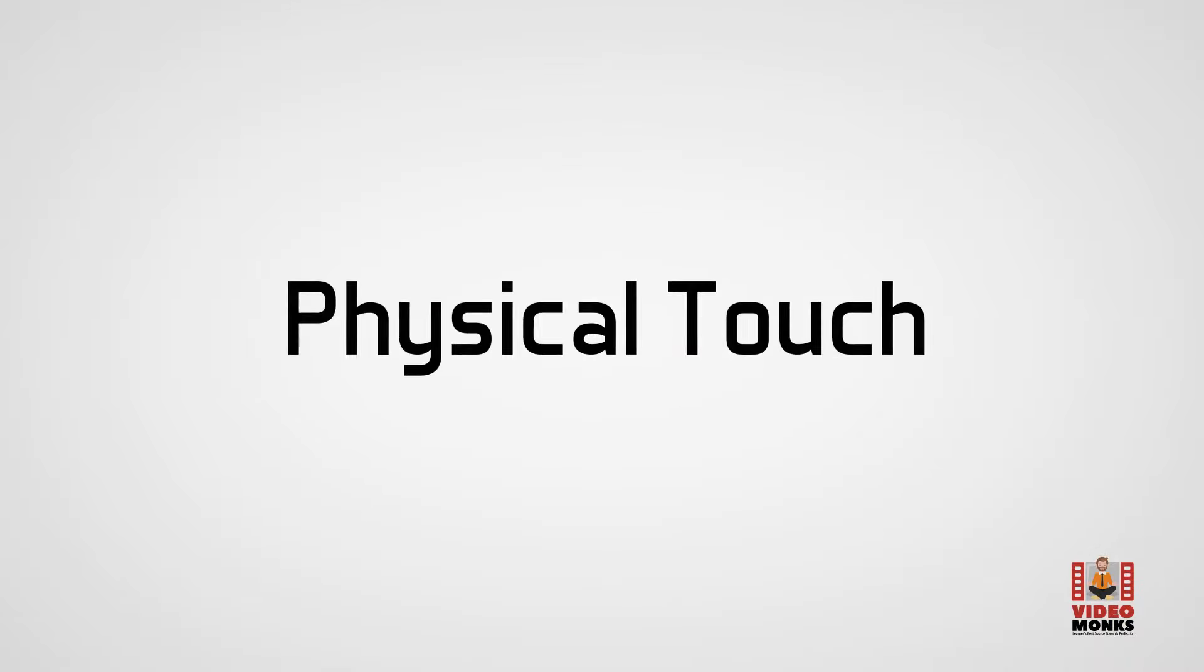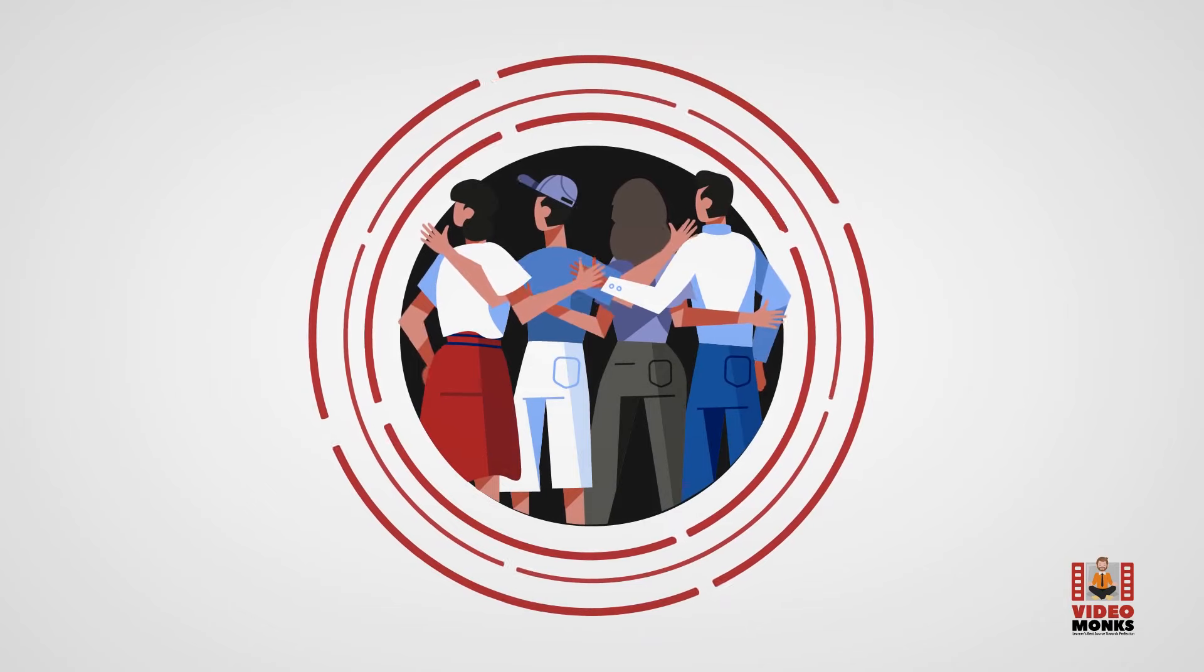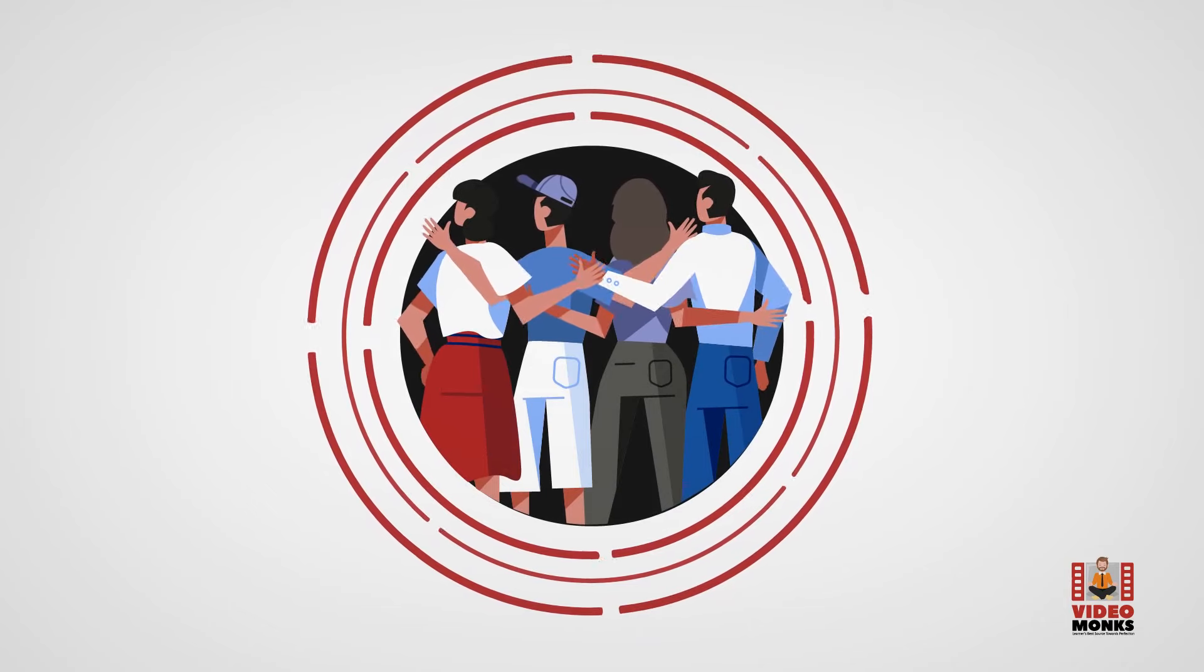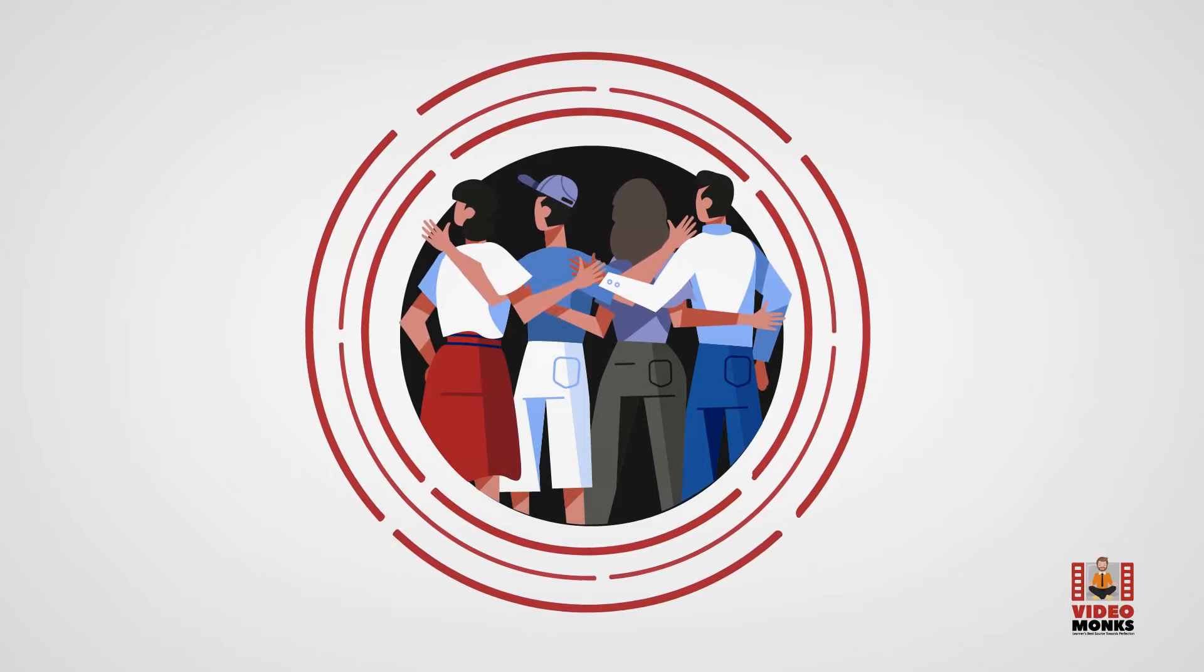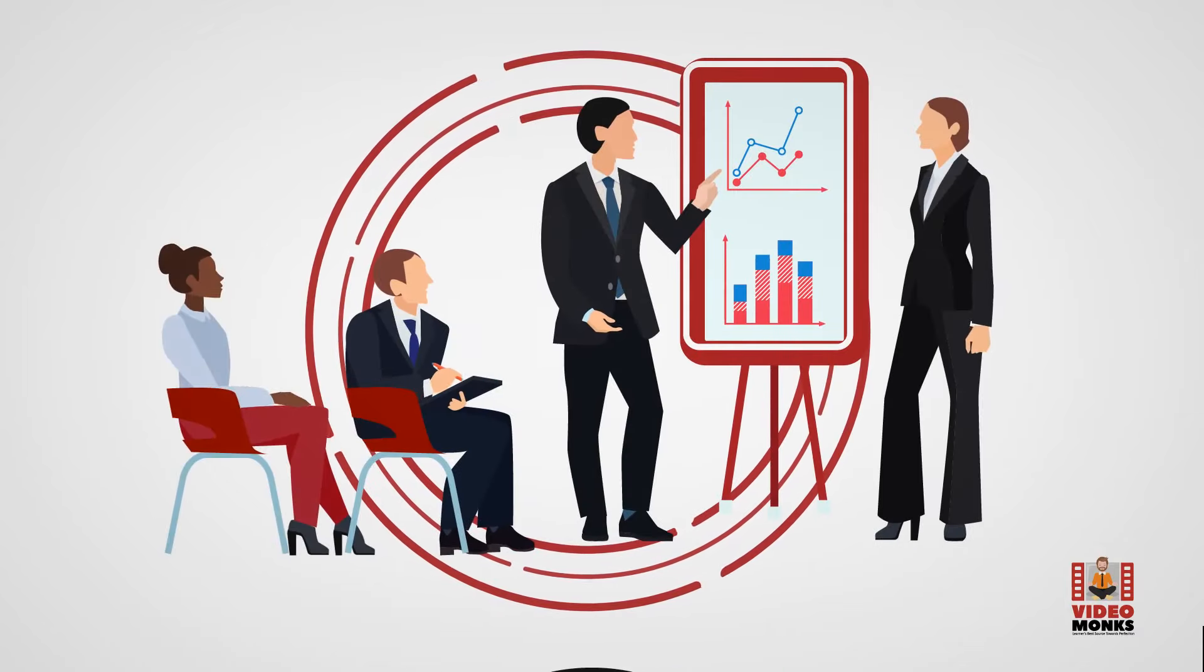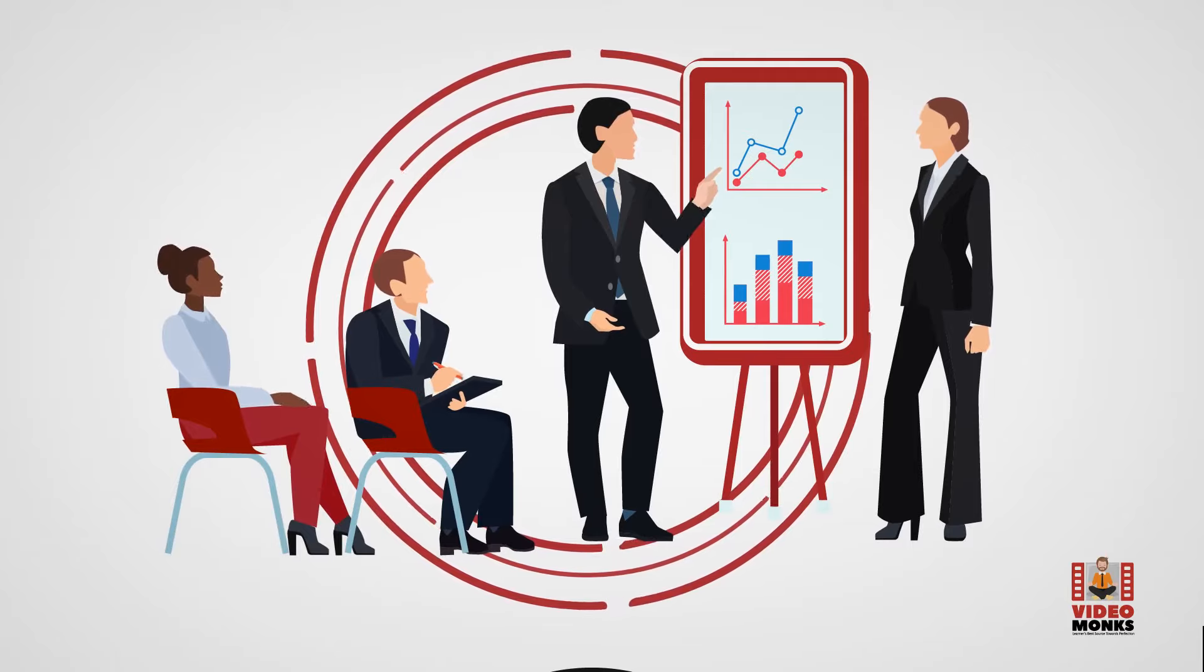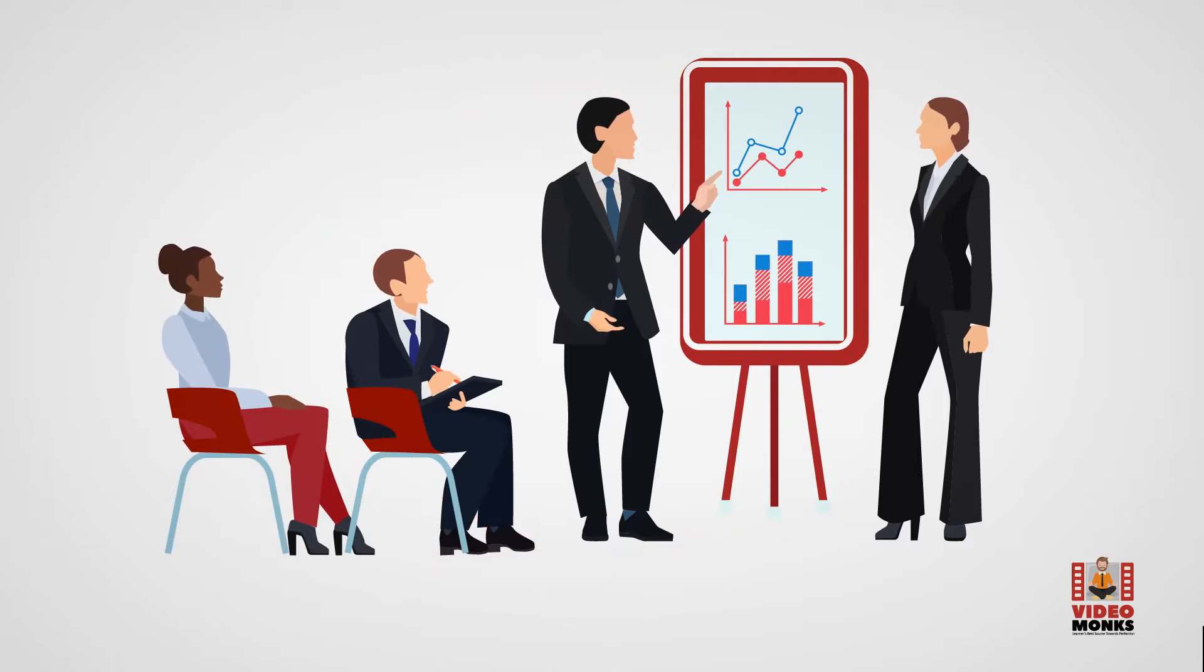Physical Touch. This language isn't just about the bedroom. Hugs, pat on the back, thoughtful touches on the shoulder or arm are all ways to show concern, excitement, and care. Physical presence and accessibility are crucial, while neglect or abuse can be unforgivable and destructive.